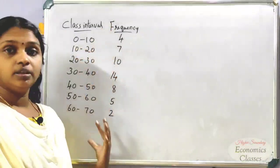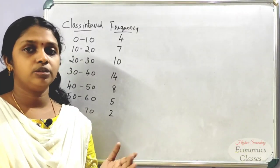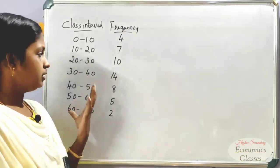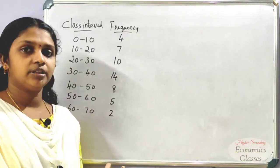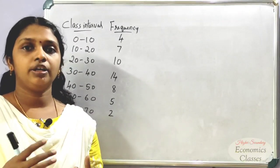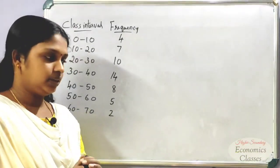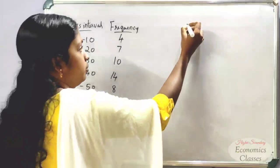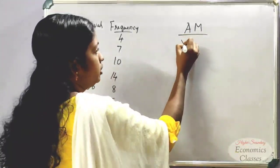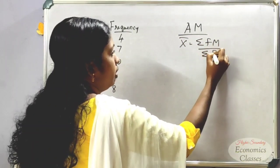This is a continuous series. We have to find out the class difference. The equation for arithmetic mean is: x̄ = Σfm divided by Σf.